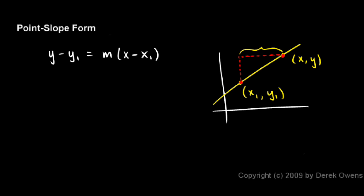The run here has to be x minus x1. So for this line, the slope m is the rise over the run. In this case, the rise is y minus y1, and the run is x minus x1.